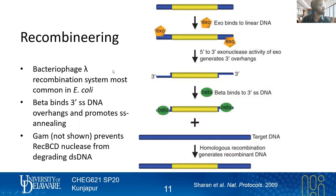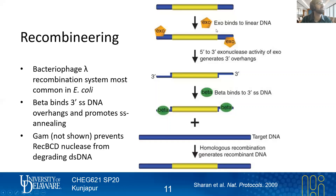Bacteriophage lambda has exo, gam, and beta proteins. You introduce linear double-stranded DNA into your cell, usually by electroporation — using a strong electrical pulse that creates a very transient electric field, allowing DNA into the cell. When you've got these proteins overexpressed, exo, like its name suggests, is an exonuclease. It cuts five prime to three prime, so if you've got double-stranded DNA, it's going to create what are called three prime overhangs — which we may have briefly discussed in the molecular cloning discussion on restriction enzymes.